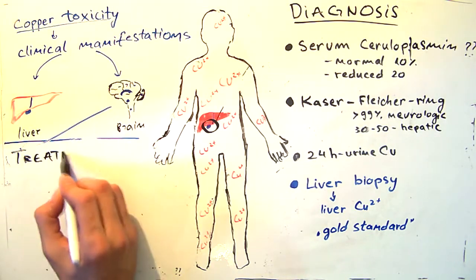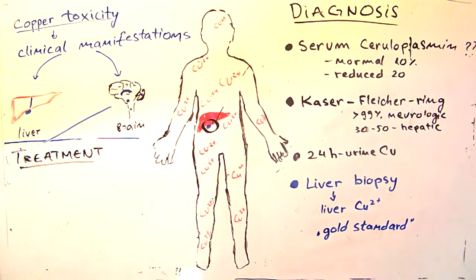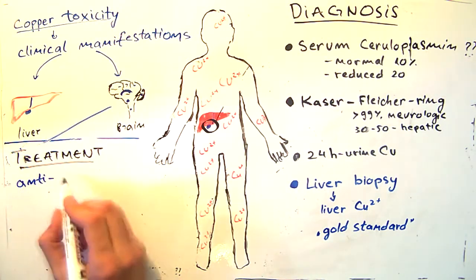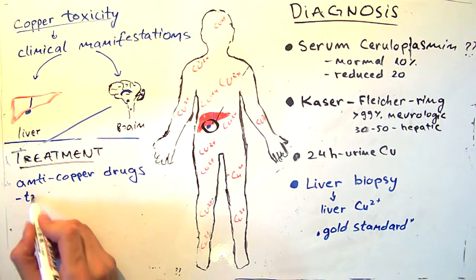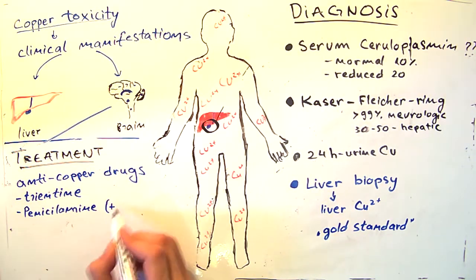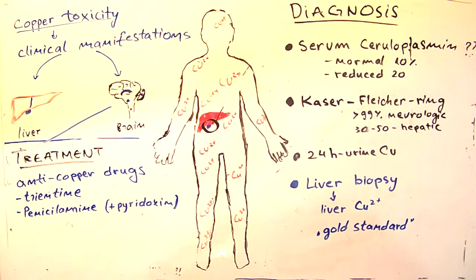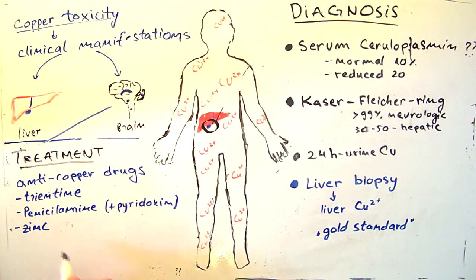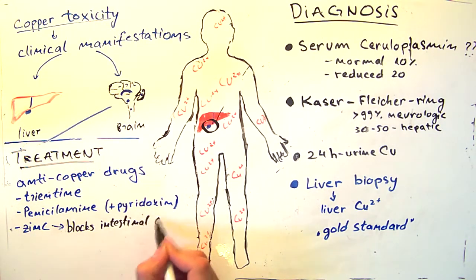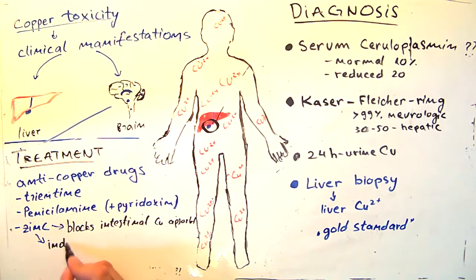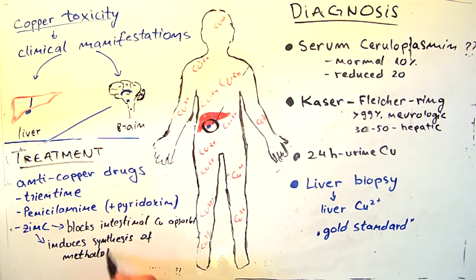And finally, the treatment. If diagnosed early, anti-copper drugs are effective. The patient might take trientine, penicillamine, and zinc. Penicillamine is usually taken together with pyridoxine. Zinc reduces the copper concentration by blocking intestinal absorption, and also induces metallothionine synthesis, which, as we said earlier, bonds the copper in the liver.